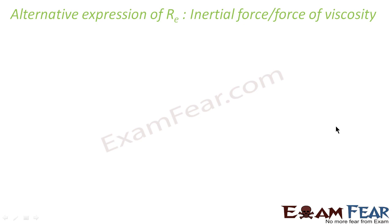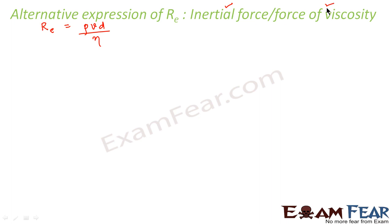Now we will derive an alternative expression for Reynolds number — this time in terms of inertial force and the force of viscosity. We have already expressed Reynolds number in terms of velocity, coefficient of viscosity, and the diameter of the tube as RE = ρVD/η. Now we will derive another expression showing that RE equals inertial force divided by the force of viscosity.